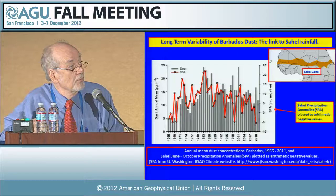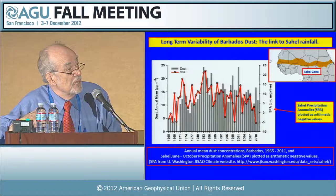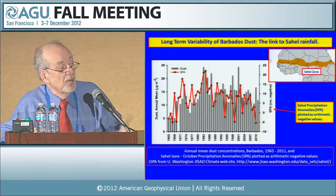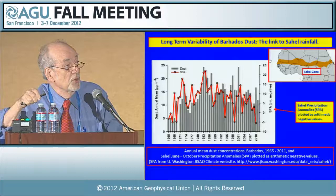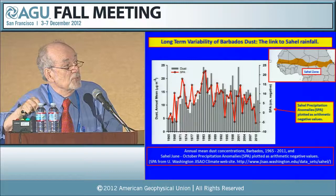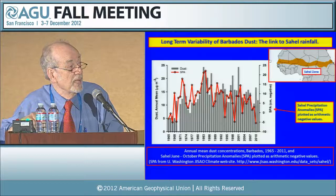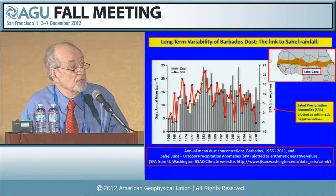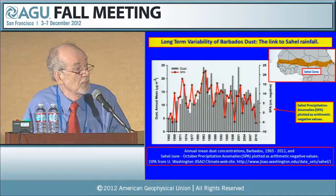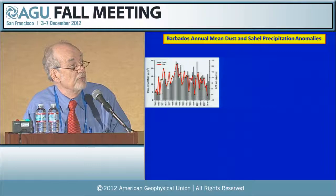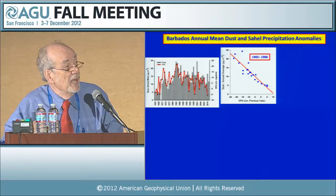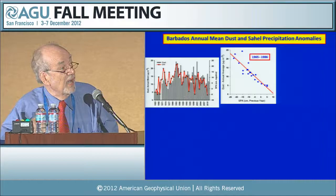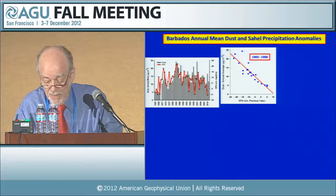Comparing dust with Sahel precipitation anomalies — plotted here as the arithmetic negative, so the most arid years are shown at the top — there's a clear correspondence between the big dust peaks in the early 1970s and then again in the second drought in the early 1980s. However, subsequent to the 1980s it's highly variable. Looking at the scatter plot of annual mean dust concentration from 1965 to 1986 against the previous year's Sahel precipitation anomaly gives a very nice relationship. For the data since the mid-1980s, there is essentially no relationship between dust concentrations at Barbados and rainfall in Africa.